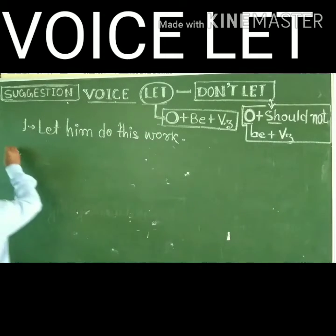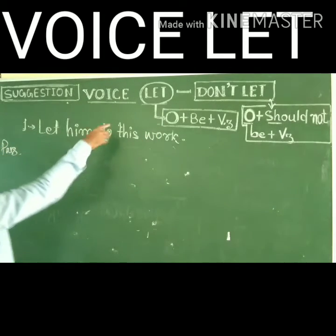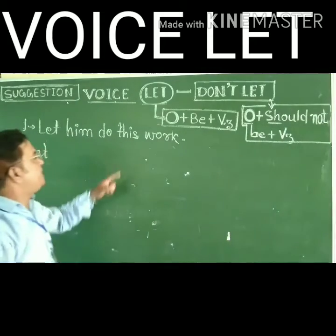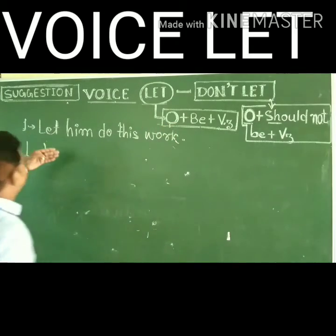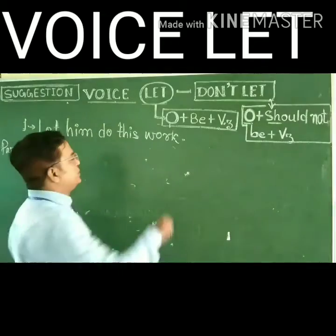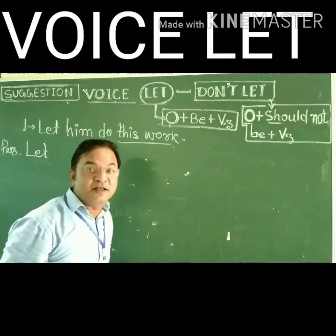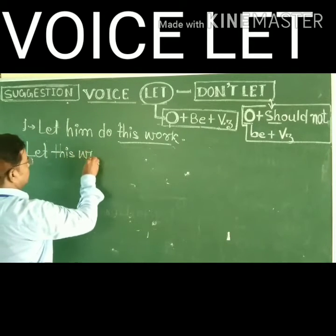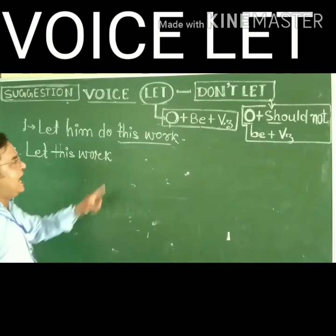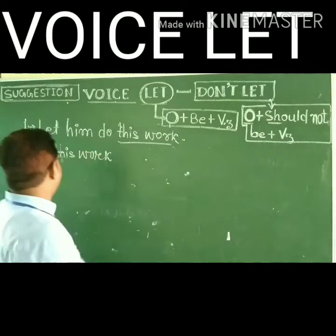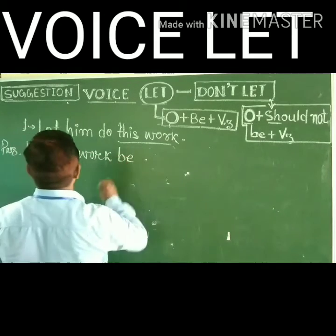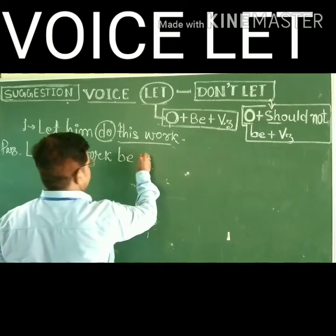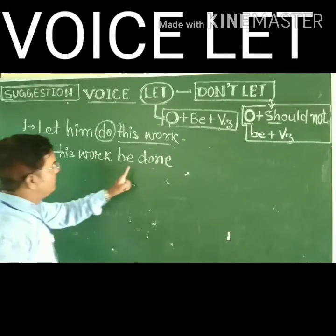So what you have to do is start your passive with 'let.' And after that you have to write an object. So what is the object? In 'Let him do this more,' 'him' is your object. So you write: 'Let him.' And after that, what do you write? 'Be.' Then you write the third form of the verb. So it becomes: 'Let this be done.' That is the passive structure.